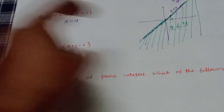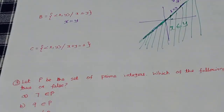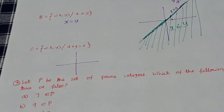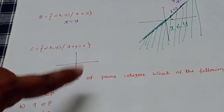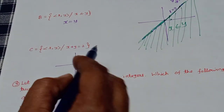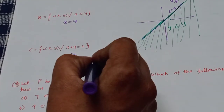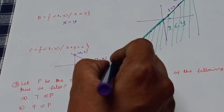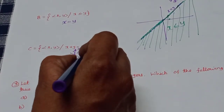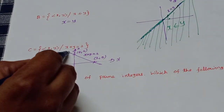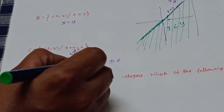The third set: points (x, y) such that x plus y equals 2. To draw this line, use intercepts. Set x to 0: y equals 2, giving point (0, 2). Set y to 0: x equals 2, giving point (2, 0). Connect these two intercepts. The points lying on the line x plus y equals 2 form this set. That is the geometric representation.